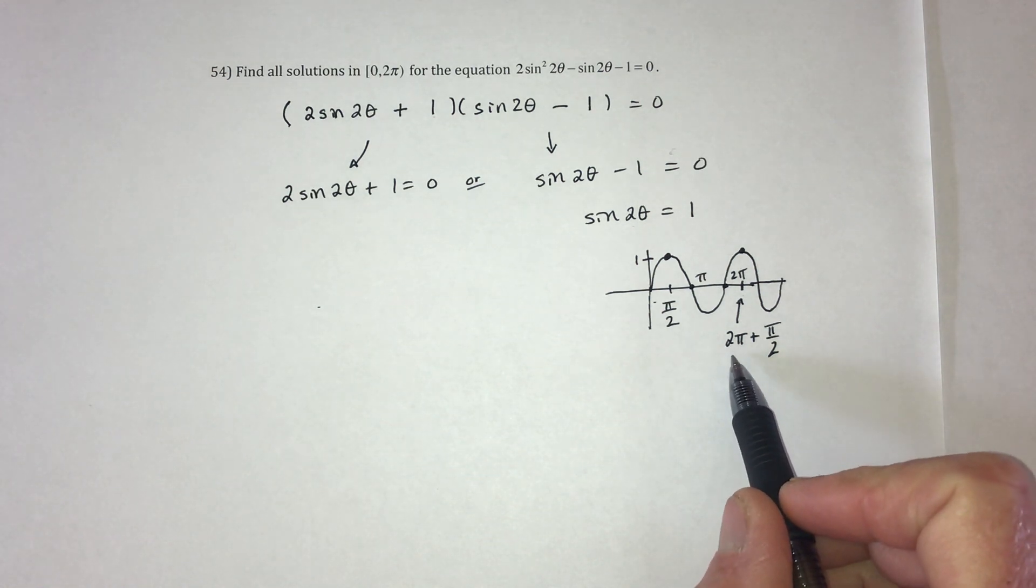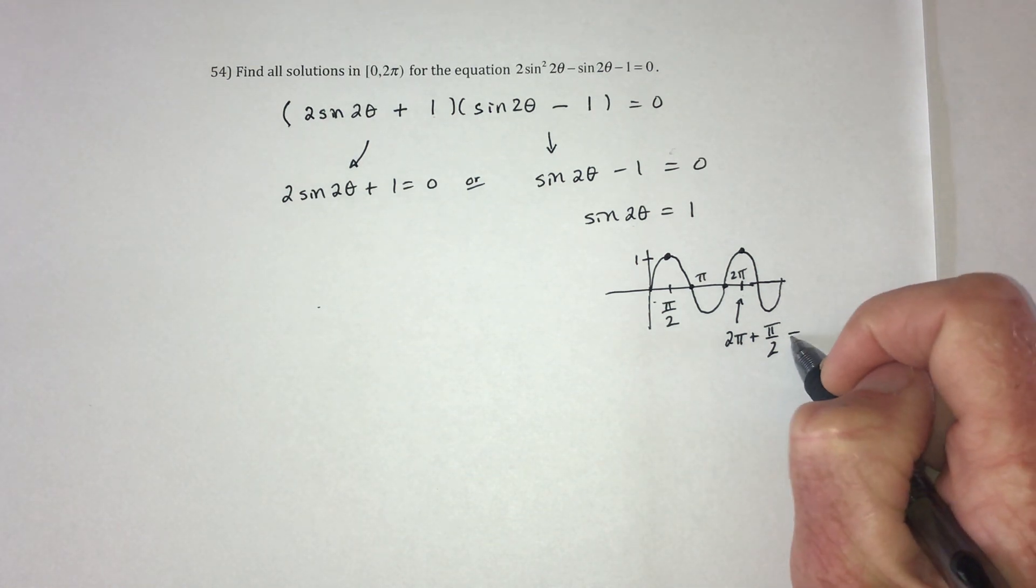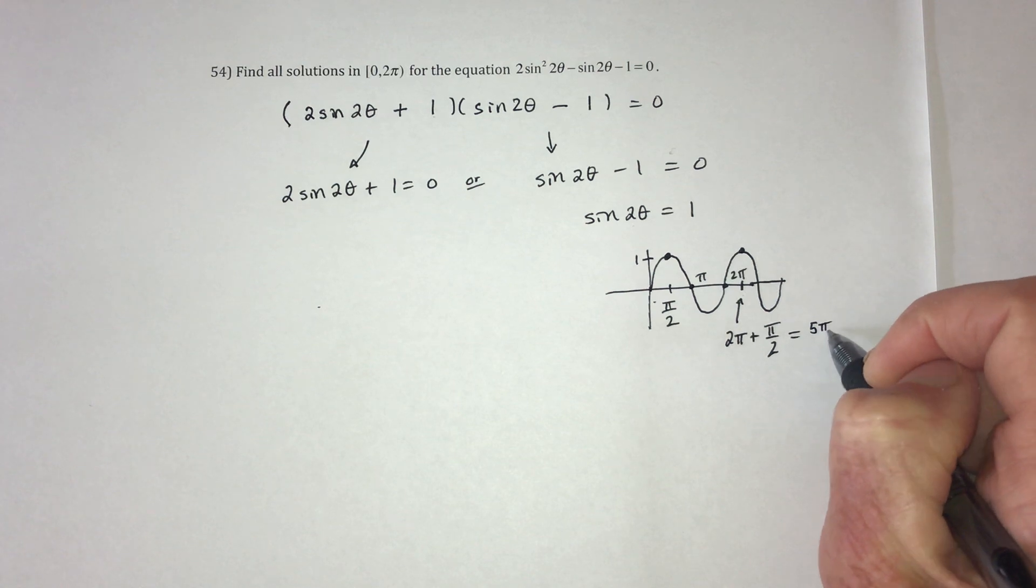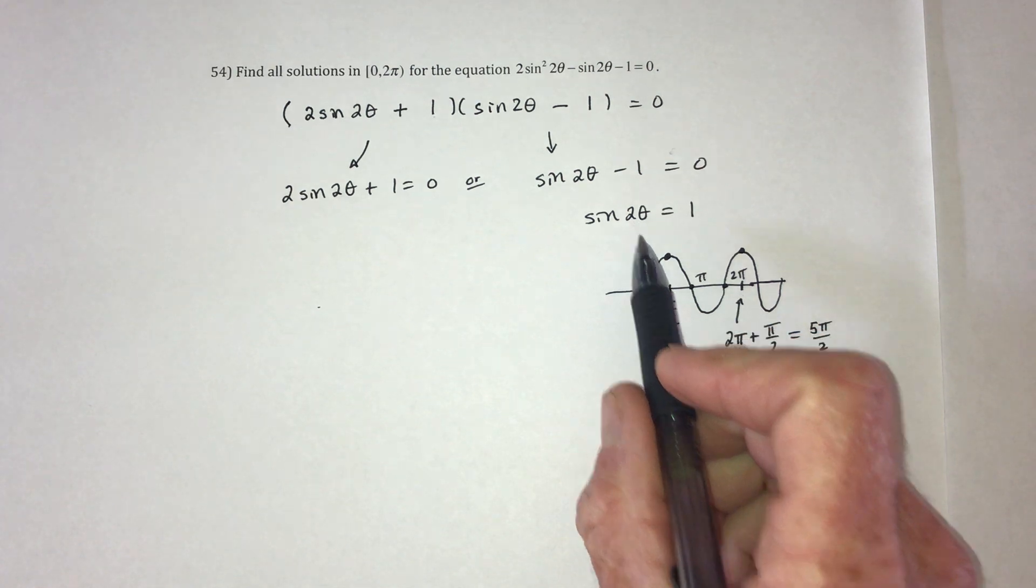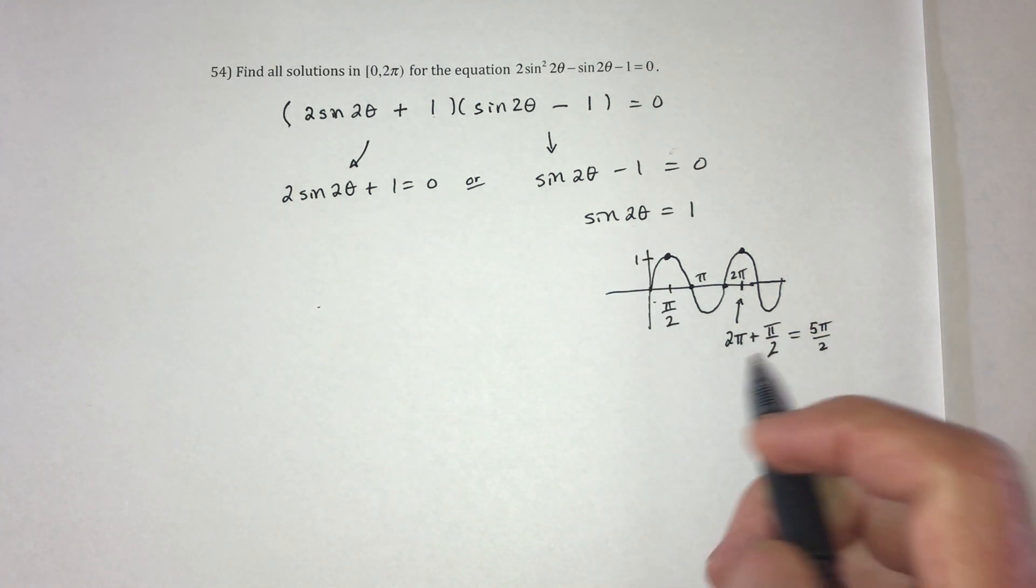So this one is going to be 2 pi plus pi over 2 from this pi over 2 right here. So this would be 4 pi over 2 plus 1 more. That's 5 pi over 2. Now, with the 2 theta, that means 2 theta equals this and 2 theta equals that.